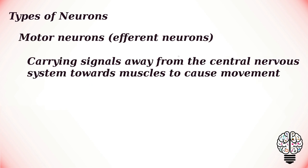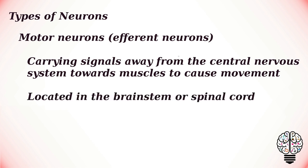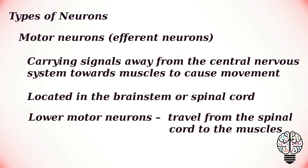Motor neurons, also referred to as efferent neurons, are the nerve cells responsible for carrying signals away from the central nervous system towards muscles to cause movement. They release neurotransmitters to trigger responses leading to muscle movement. Motor neurons are located in the brain stem or spinal cord and connect to muscles, glands, and organs throughout the body. These neurons transmit signals from the spinal cord and brain stem to skeletal and smooth muscle to either directly or indirectly control muscle movements. For instance, after touching a hot surface, once the message has been received from the sensory neurons, the motor neurons cause the hand to move away.